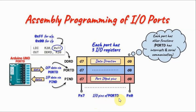In addition to inputting and outputting 1s and 0s, each port has other functions. For example, port D has interrupts and serial communications, port C has analog inputs, and so on. These other functionalities will be discussed in future videos.